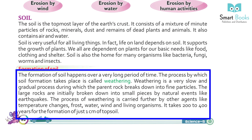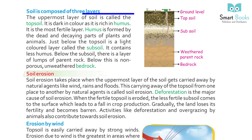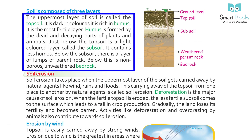It takes 200 to 400 years for the formation of just one centimeter of topsoil. Soil is composed of three layers. The uppermost layer of soil is called the topsoil; it is dark in color as it is rich in humus, and it is the most fertile layer. Humus is formed by the dead and decaying parts of plants and animals. Just below the topsoil is a light colored layer called the subsoil, which contains less humus. Below the subsoil there is a layer of lumps of parent rock, and below this is non-porous, unweathered bedrock.